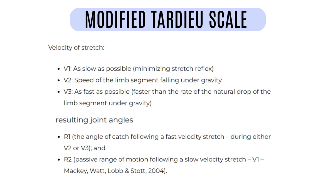When using the MTS, we have to consider the velocity and also the range of motion where the resistance occurs. For the velocity of the stretch, there's V1, V2, and V3, meaning we have to conduct the test at all three velocities. For V1, it is moving as slow as possible. For V2, it is moving at the speed of gravity. And for V3, it is moving as fast as possible.